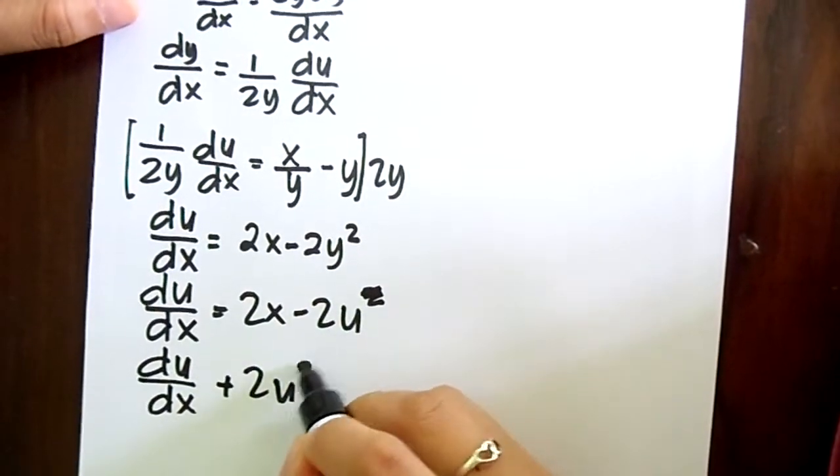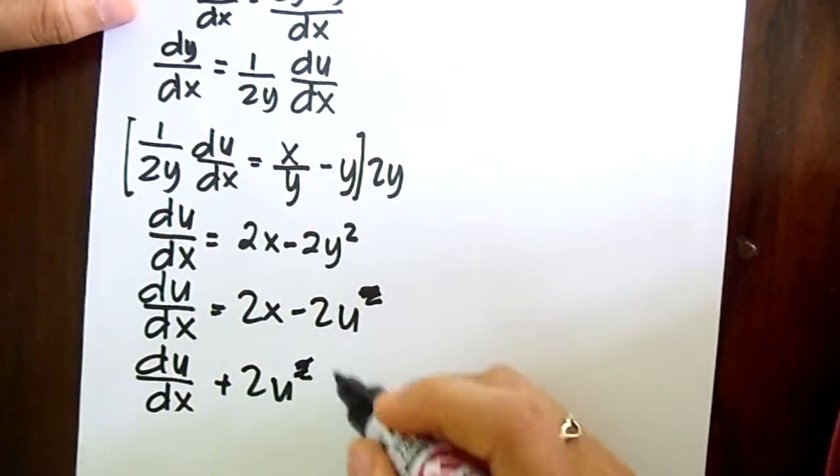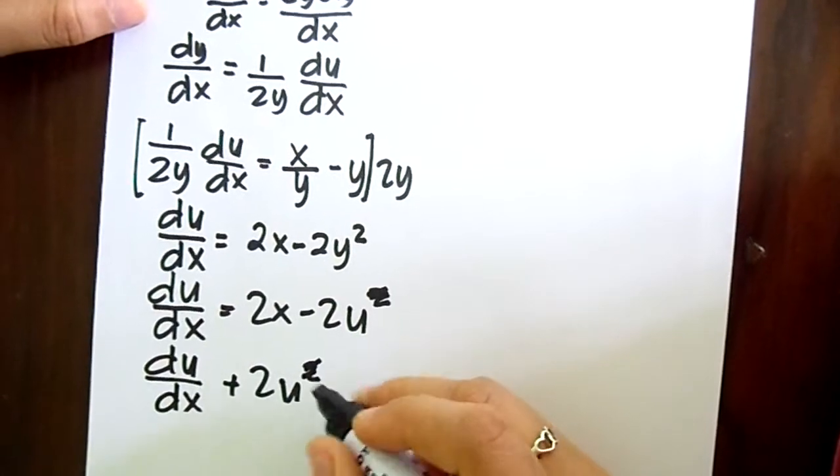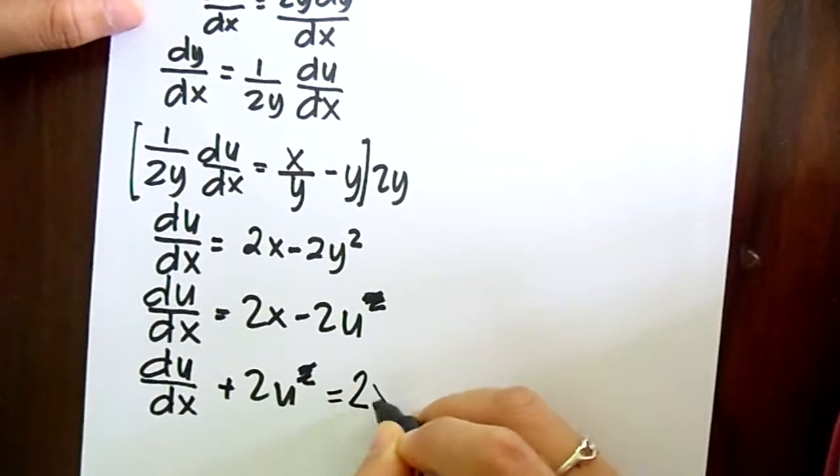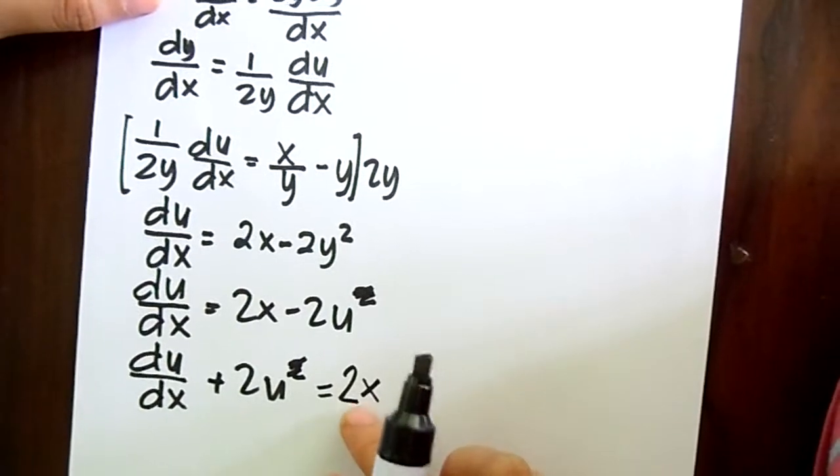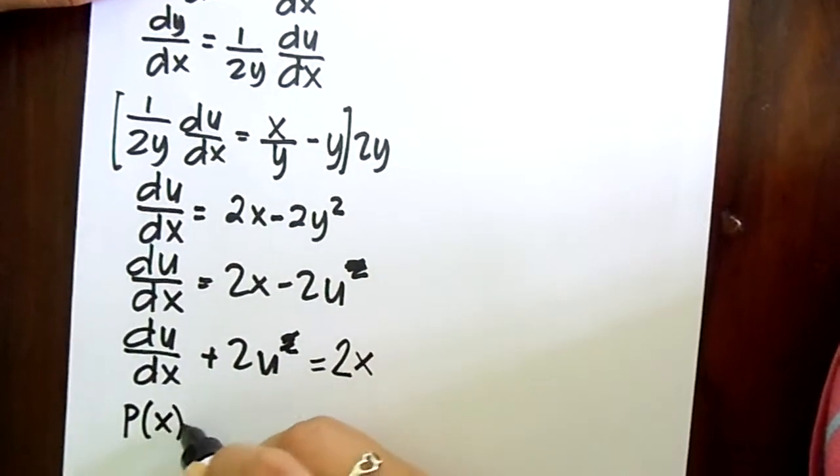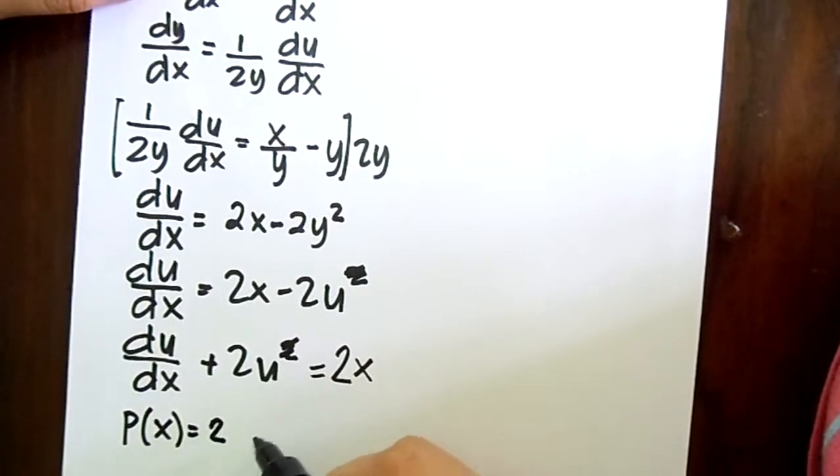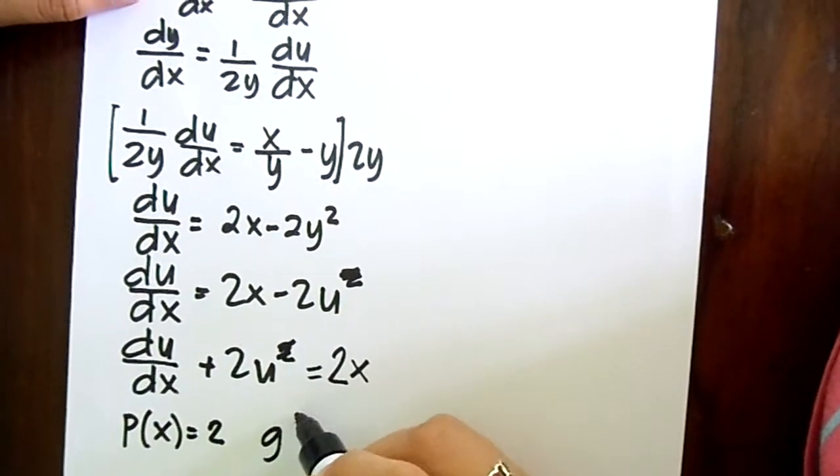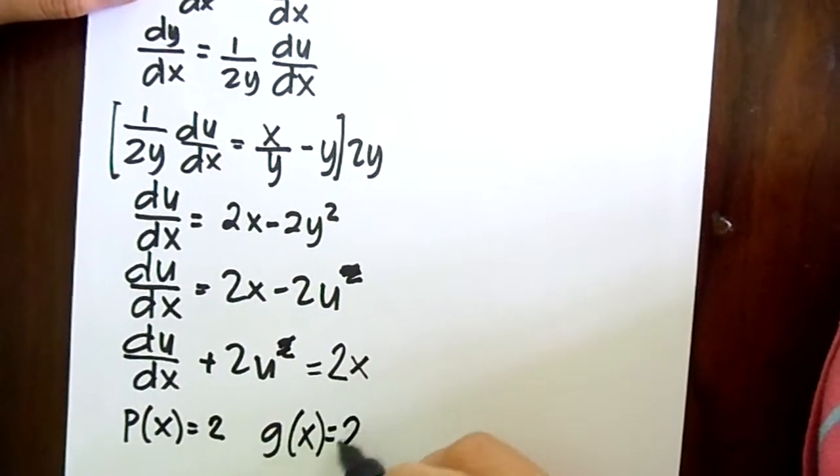It is only u. 2u equals 2x. It is now clearly a linear differential equation, with p of x, which is equal to 2, and g of x, which is equal to 2x.